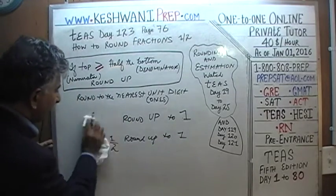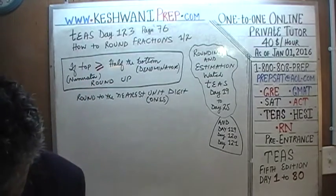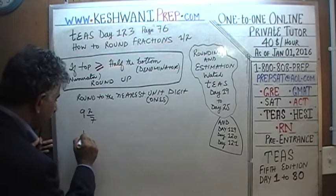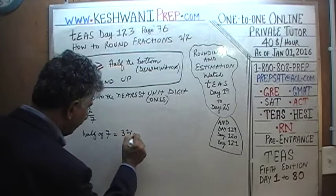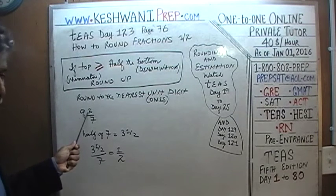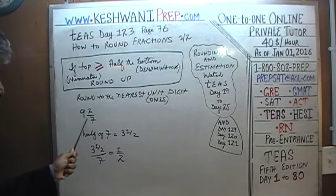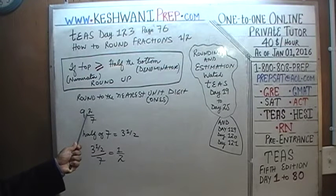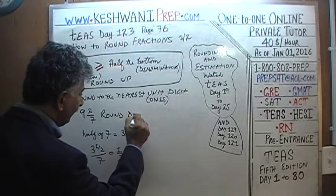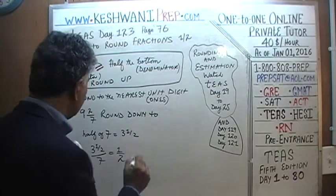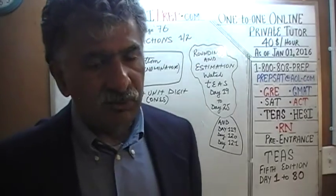Let's do one with mixed fractions — how about 9 and 2/7? Well, half of 7 is 3 and a half, so 3½ over 7 is exactly half. We don't have 3½ on top; we only have 2. Since 2/7 is less than half, this quantity is less than 9.5, so we're going to round it down. The nearest unit digit to 9 and 2/7 is 9.